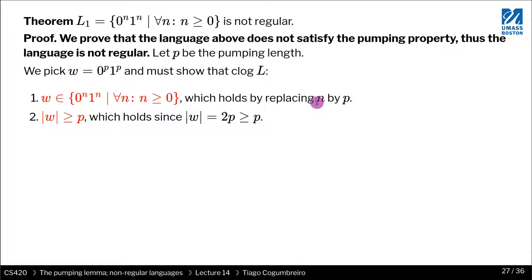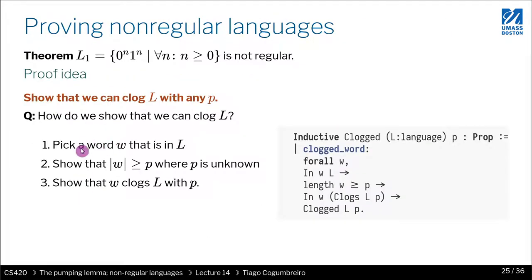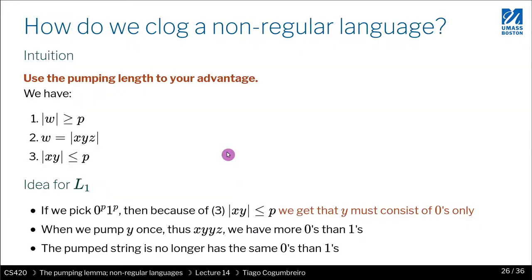So how do we prove this? We pick the string to be 0 to the P and 1 to the P, and we show that it must clog L. So first thing we need to prove, there are three things that we need to prove according to these three items. First, we pick the string and we show that it belongs to L. Secondly, we must talk about the length. And finally, the interesting part is showing that it clogs the language.